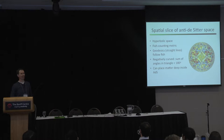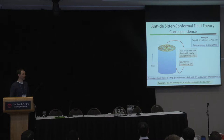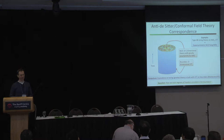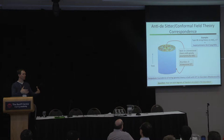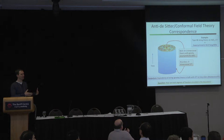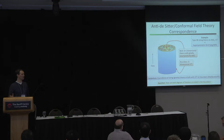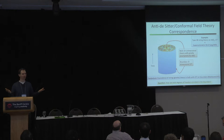We also want to know more about the emergence of bulk locality and the nature of this isomorphism — how observables map back and forth. To help orient you: if you take a spatial slice of anti-de Sitter space, what you get is hyperbolic space — uniformly negatively curved space. Escher was fond of drawing beautiful renditions of hyperbolic space. The way you measure distances in hyperbolic space, if you draw it this way, is you count fish.